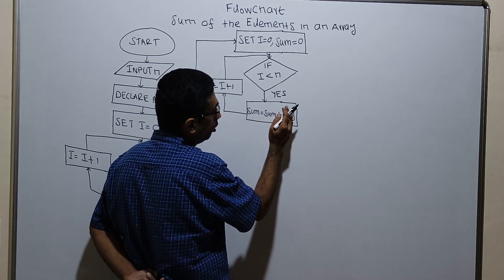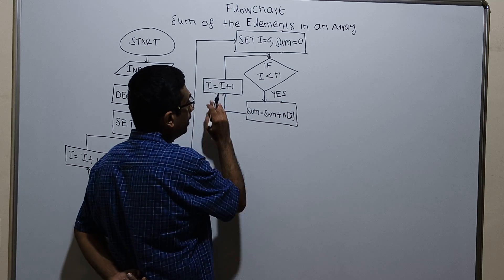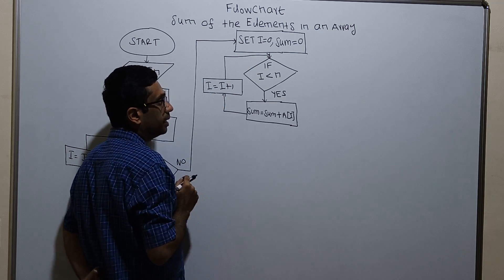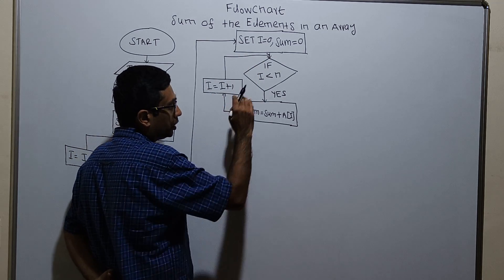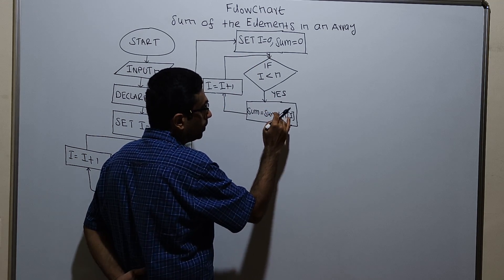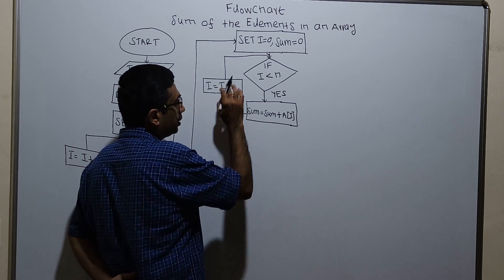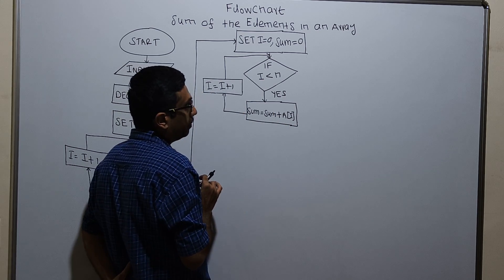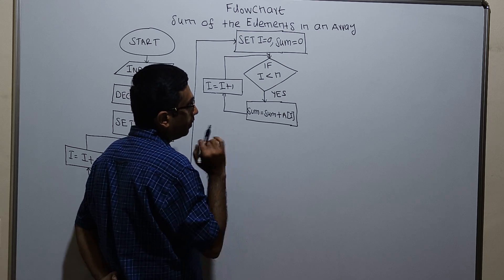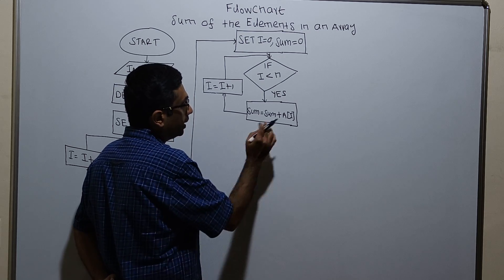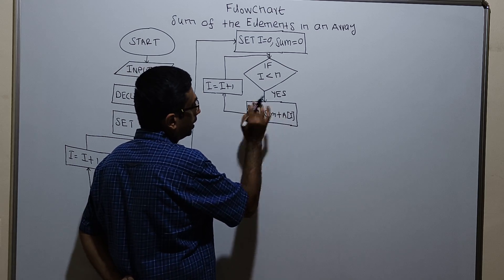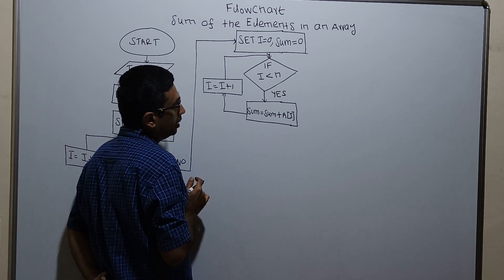That means the value of a of 0 will get stored in the sum. Along with this, now i equal to 1, a of 1 will get added. i will get incremented by 1. Again i less than n will be checked. Existing value of sum plus a of 2 will get added. So in this loop, the array values from a of 0 to a of n minus 1 will get added with the variable sum. So all the elements are added in the variable sum.